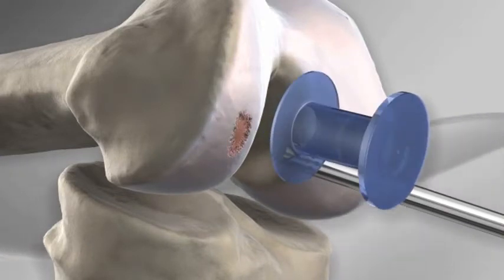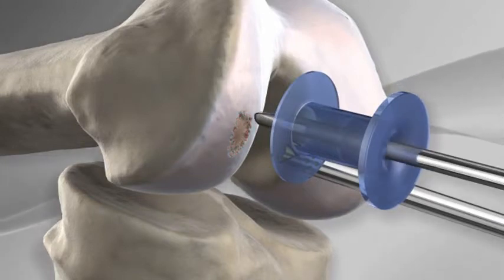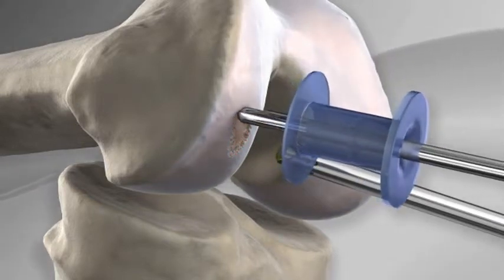The articular cartilage injury in the knee is identified and probed. An arthroscopic shaver or burr is placed inside the knee through the cannula.